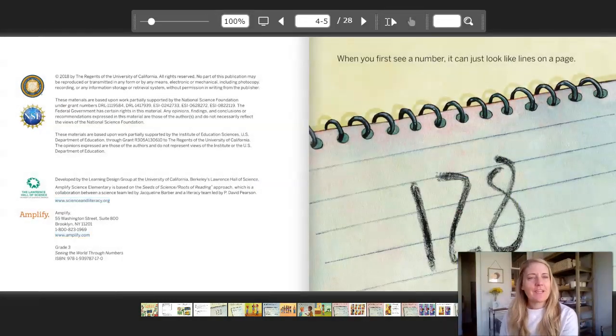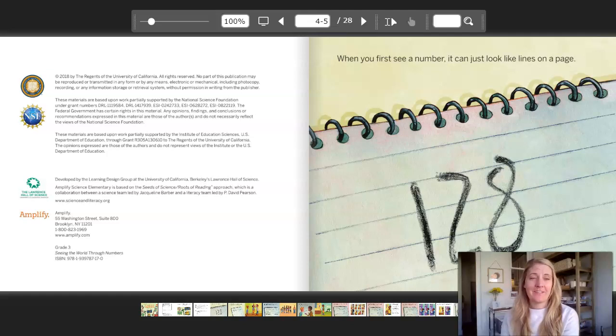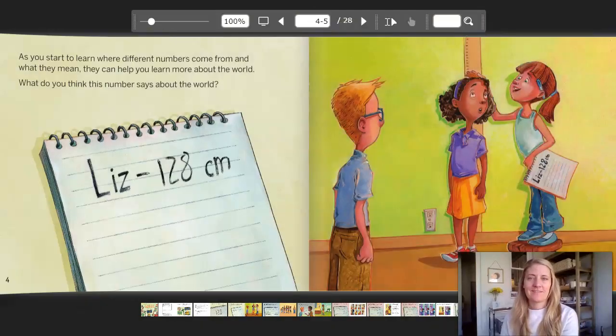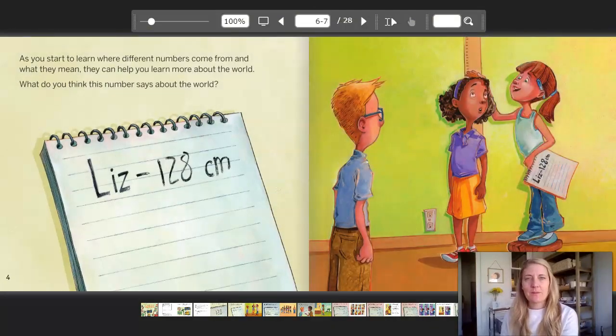When you first see a number, it can look just like lines on a page. As you start to learn where different numbers come from and what they mean, they can help you learn more about the world. What do you think this number says about the world? And written on the notepad it says, Liz, 128 centimeters.